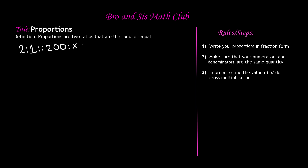In order to solve for X, we look at our steps. Step one says: write your proportions in fraction form. The first ratio, two to one, is written as two over one. And the proportion sign is really an equal sign, because proportions are two ratios that are the same or equal. So the proportion sign equals the equal sign.